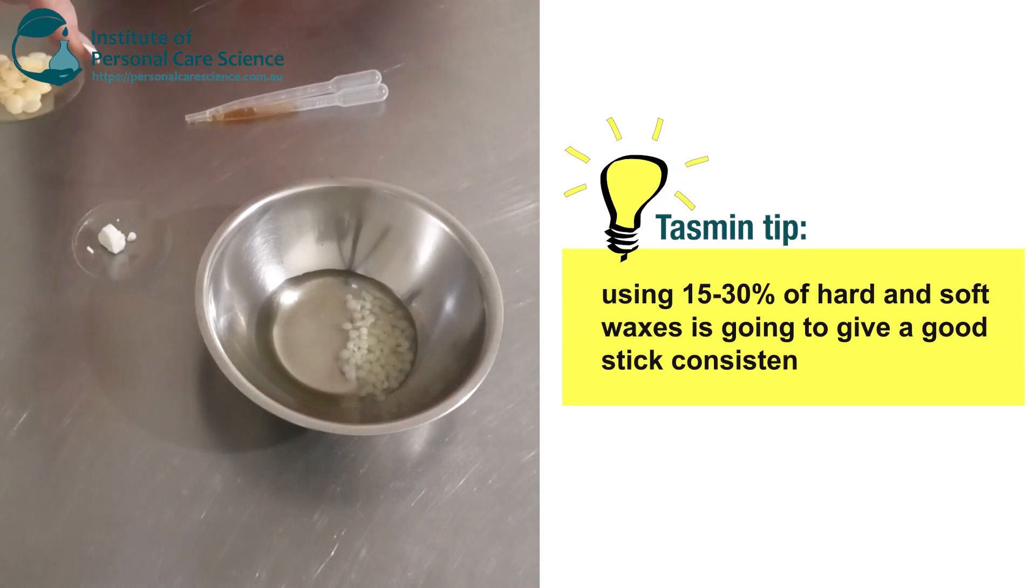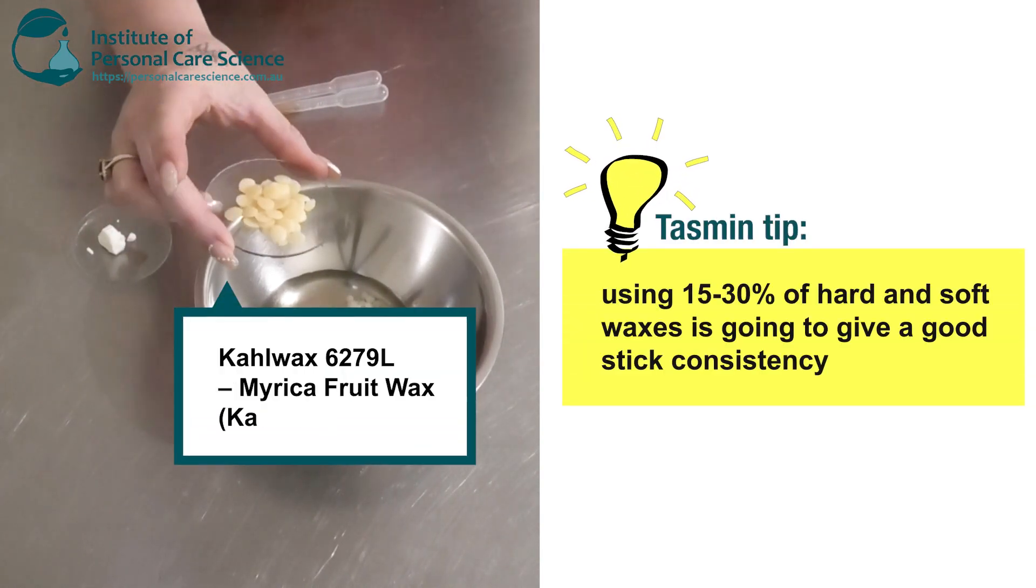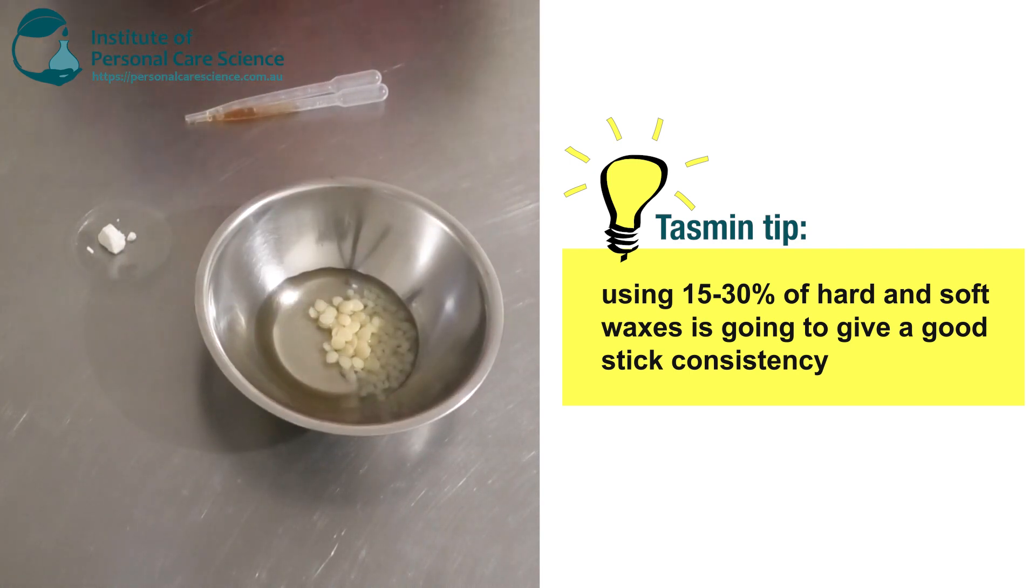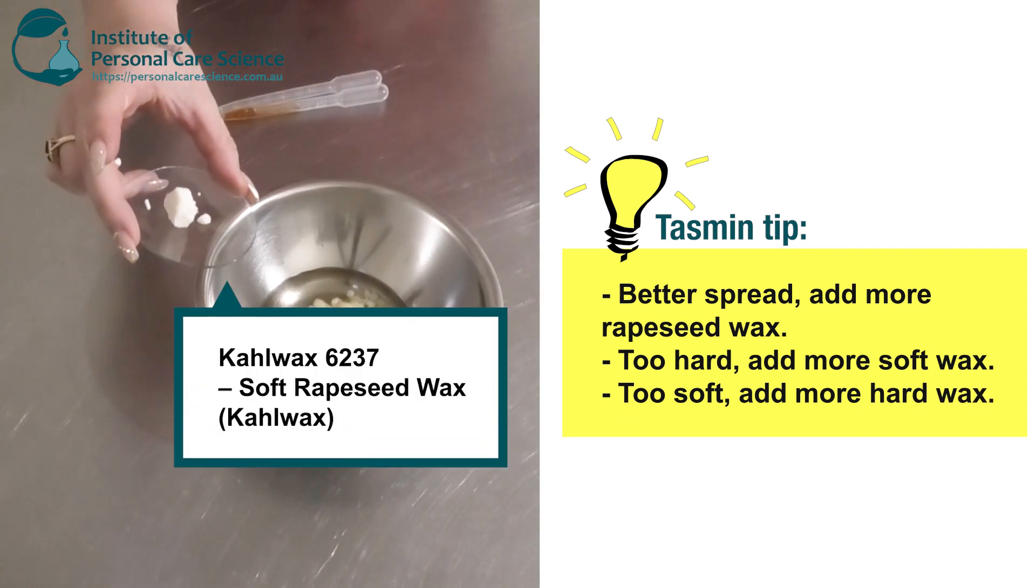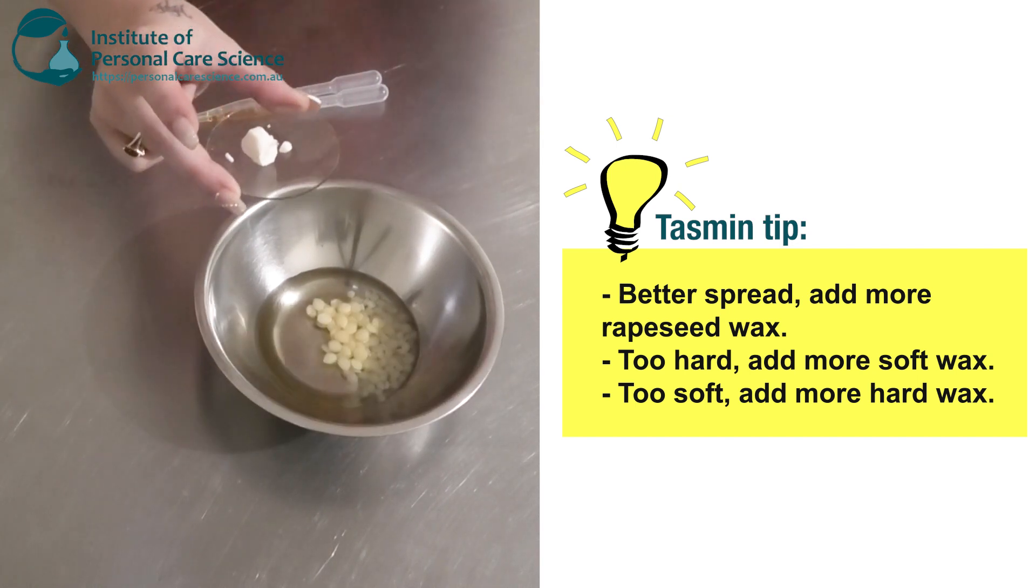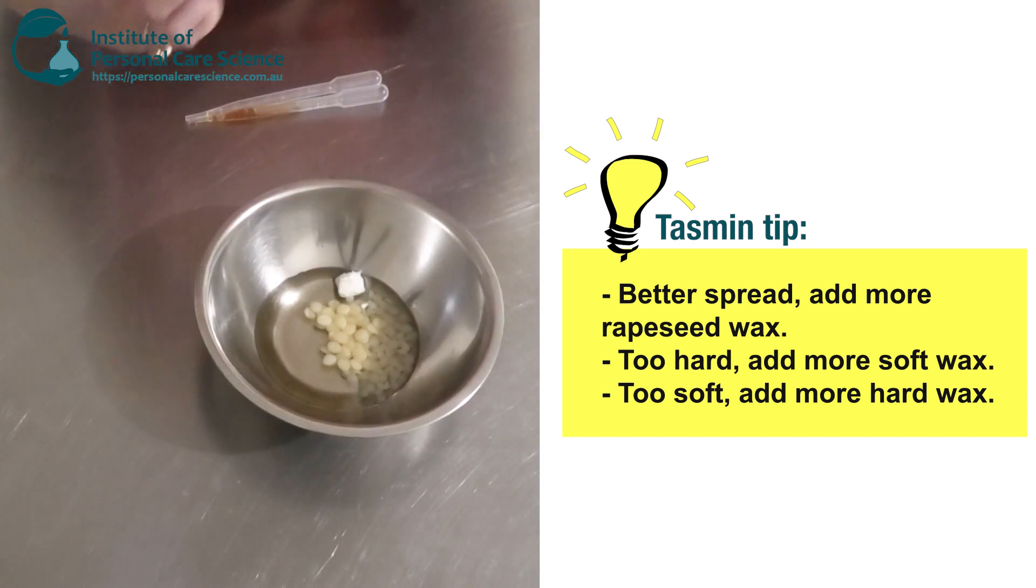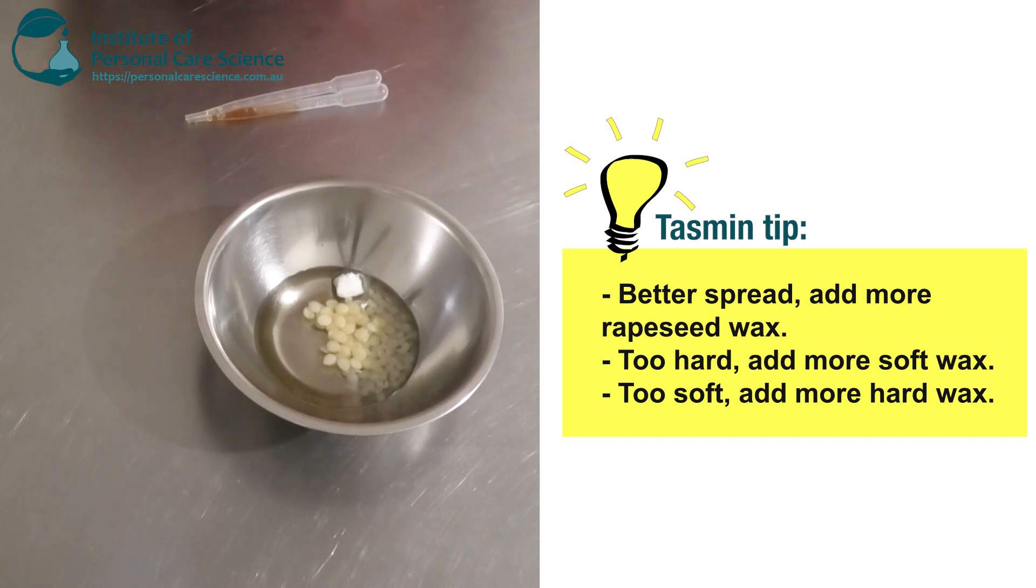I'm also going to add in a bit of the Marika fruit wax as well by Kahl wax. This is another really good hard or semi-hard wax. And I'm also going to add a little bit of the Kahl wax rapeseed. Now this is going to help spread—it's got really good spreading abilities—and it's also a soft wax, so it's going to help with making the stick not too hard and brittle, but it's also going to help glide it through the hair and make it really easier to apply.